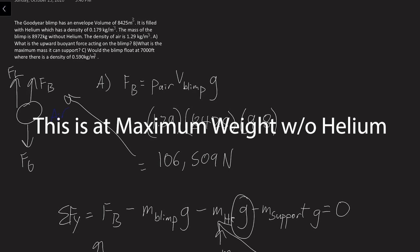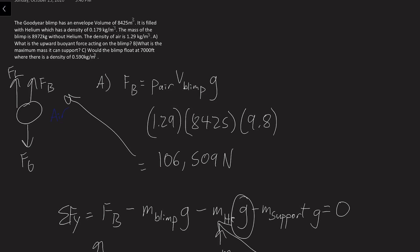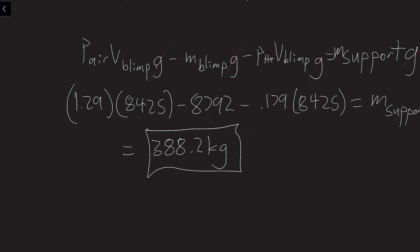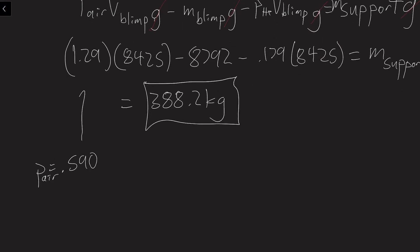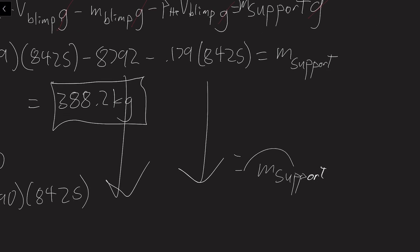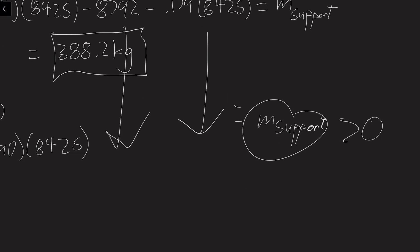So for the last part, would you expect the blimp to float at 7,000 feet where there's a density of 0.590 kilograms per cubic meter? So then we can plug that into the equation, and the only thing changing would go in here. So it'd be 0.590 times 8,425. And you still subtract this, subtract this, and you'd see the mass it can support. And if the mass it can support is greater than 0, then the blimp would be able to float at that altitude. If it's less than 0 and a negative number, it would not be able to float.